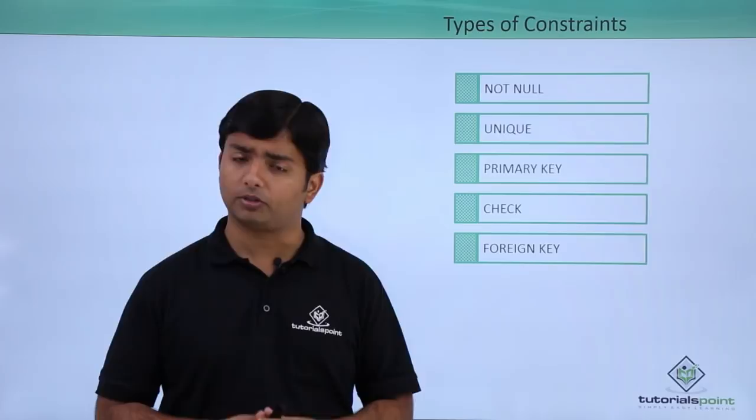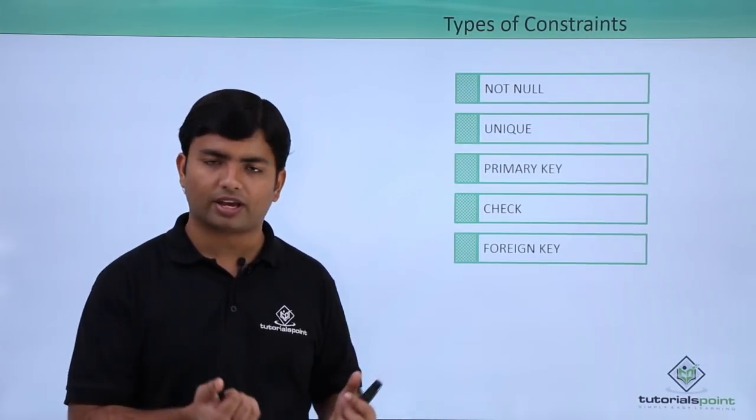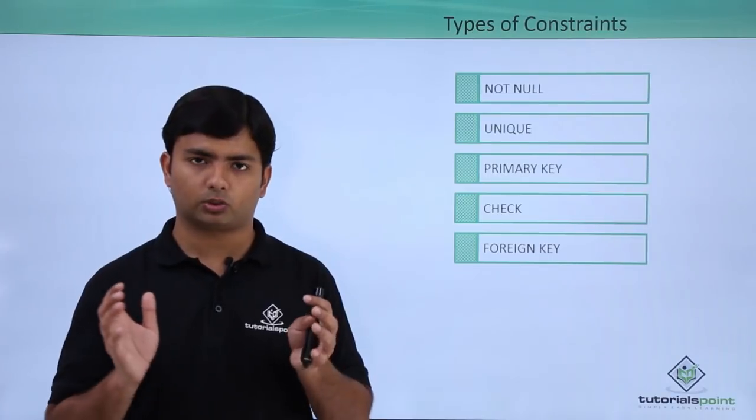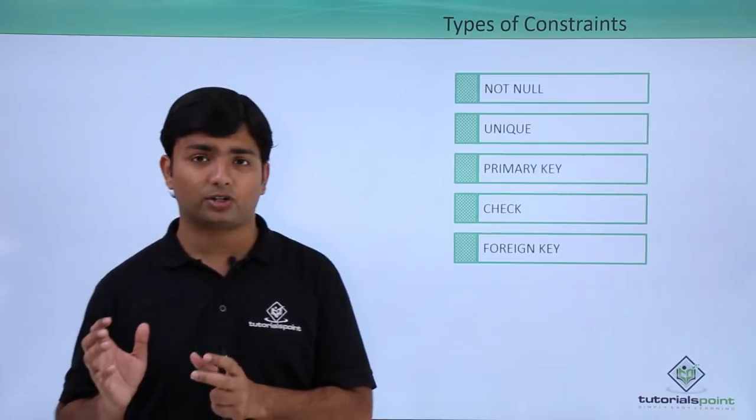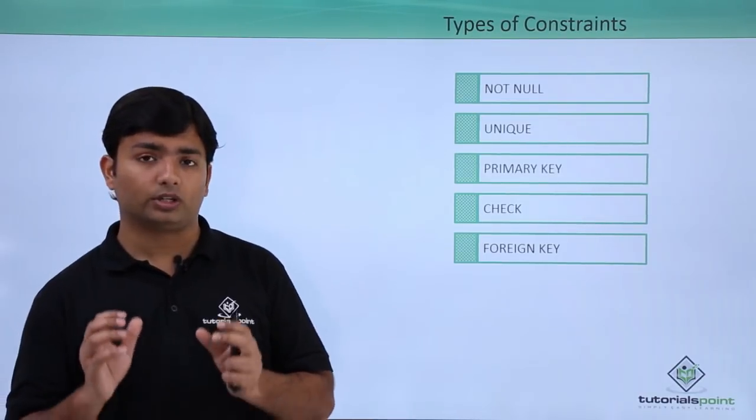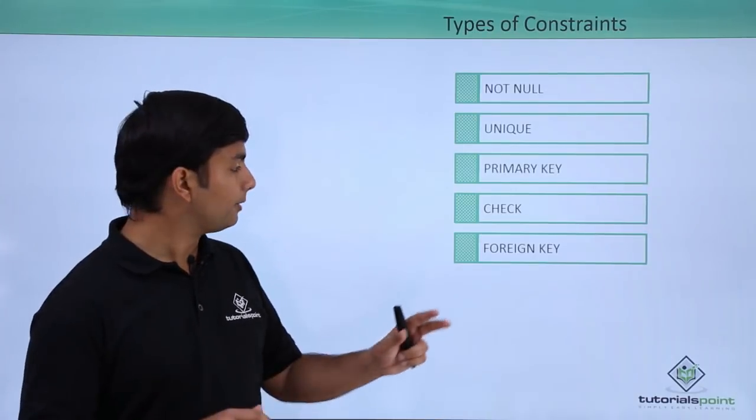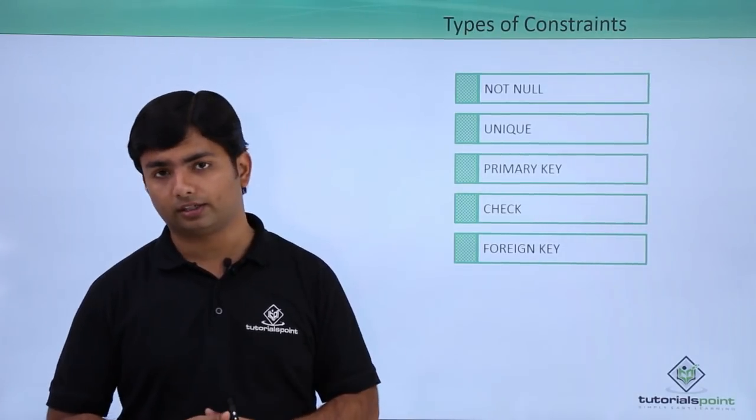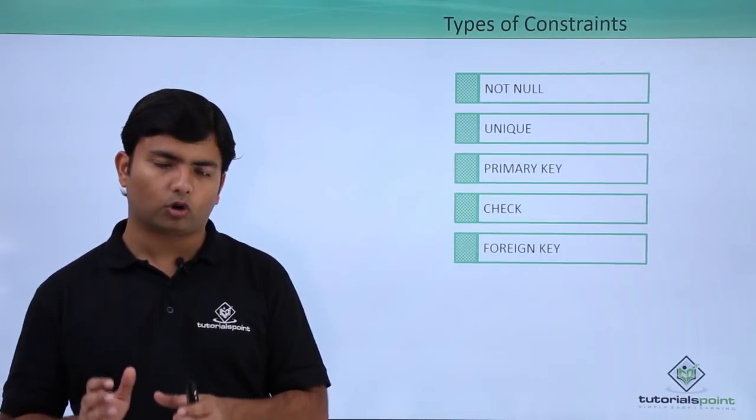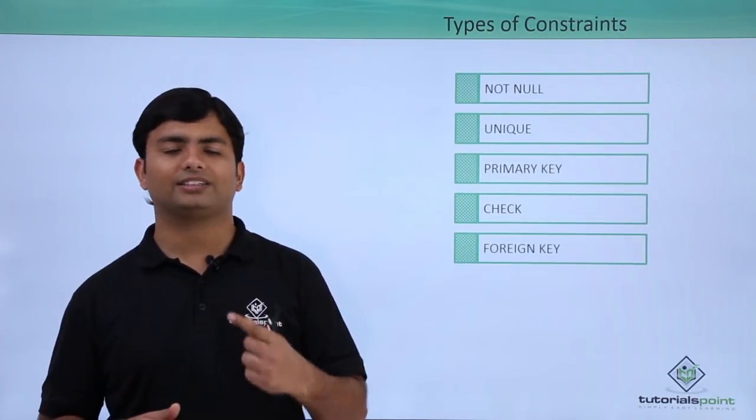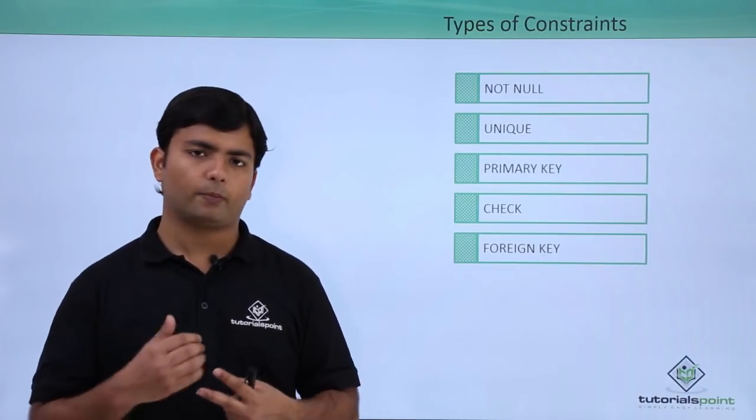CHECK constraint will be used when you want any particular coming value must be of a particular type. For example, if I'm having a column called salary and I don't want any value less than 5000 should be entered into that, so I can pass as a check constraint. Similarly, if I have a column called gender which is accepting a single character, that is M or F. M or F makes sense.